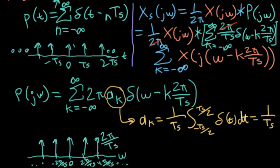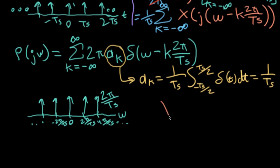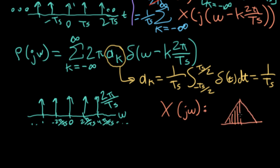To plot what big XS of j omega looks like, I need some concept of what big X of j omega is. Just like we did in the amplitude modulation lecture, let's say it goes from minus omega B to omega B, so the highest frequency is omega B. Technically it needs to be zero at omega B, but it can be doing all sorts of things in between.